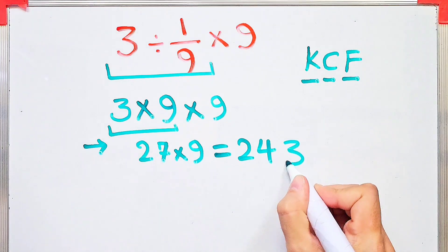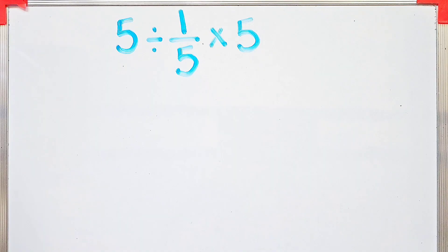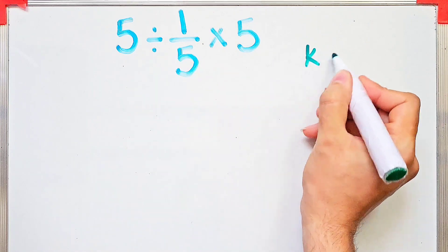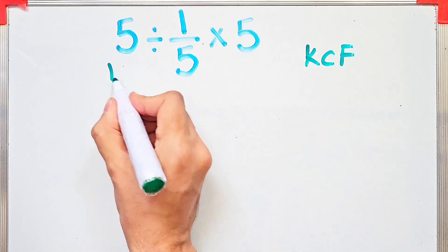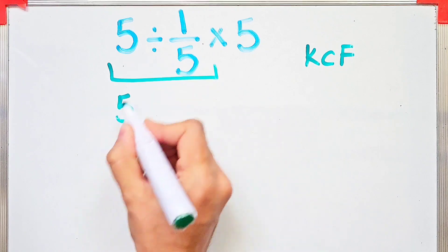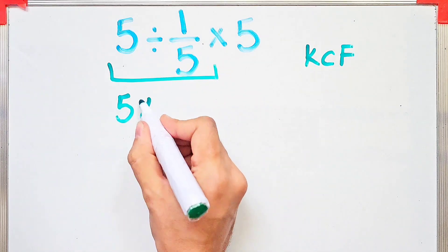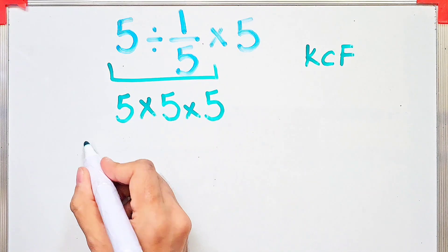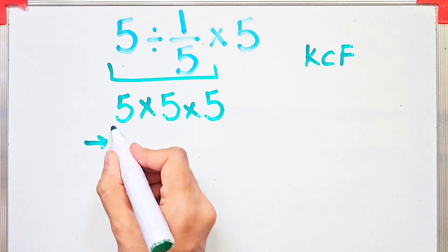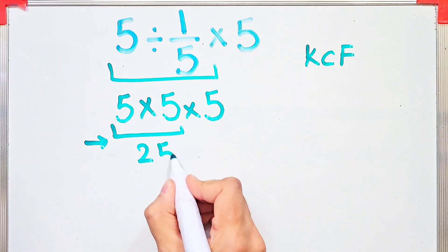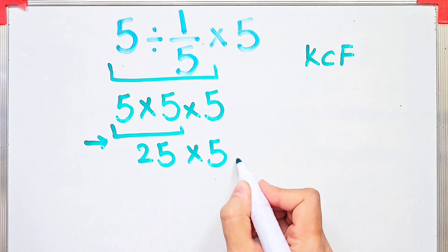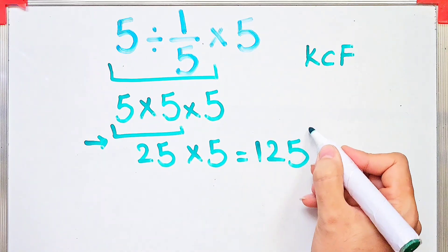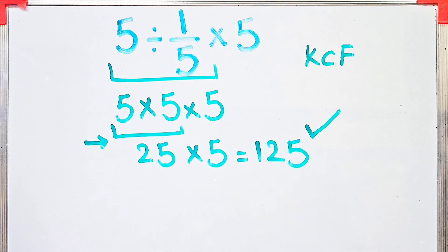Let's do one more for practice. In the new question we have 5 divided by 1 over 5, then times 5. Again we use the KCF rule: keep the first number as it is, change the division sign to multiplication, then flip the second fraction. Now we do the multiplications: 5 times 5 equals 25, and 25 times 5 equals 125 — that's the final answer. Subscribe to the channel to see more math videos.